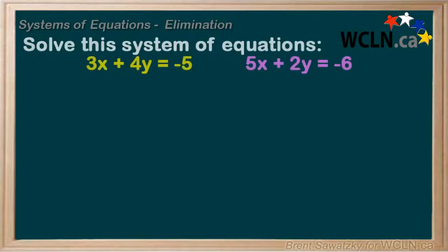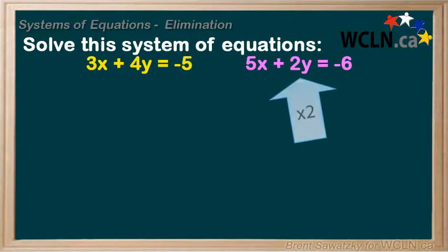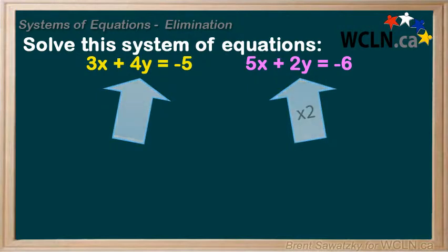Solve this system of equations: 3x plus 4y equals negative 5, and 5x plus 2y equals negative 6. Again, we have two equations and two unknowns. Now this one we could solve by substitution, but it would be quite messy, so elimination is definitely preferred. We note that we could multiply the second equation by 2, and then we would have 4y in both equations and could eliminate it.